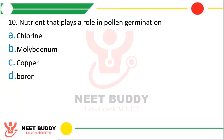Question 10: Nutrient that plays a role in pollen germination is? Option A, chlorine. Option B, molybdenum. Option C, copper. Option D, boron. The correct answer is Option D — that is boron.